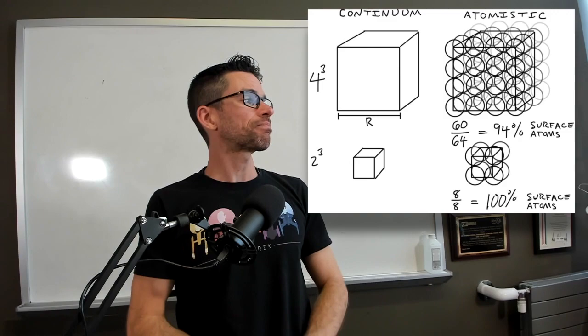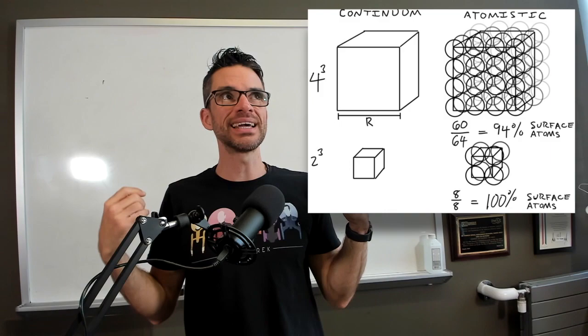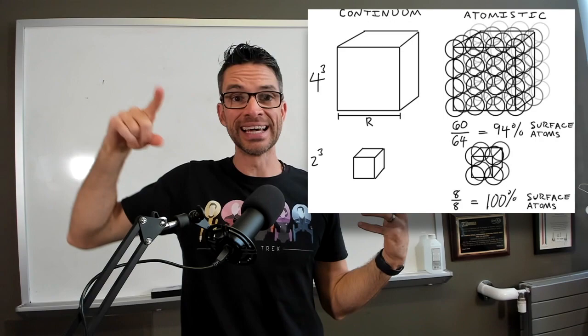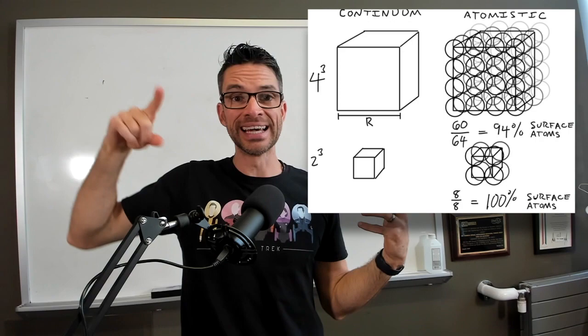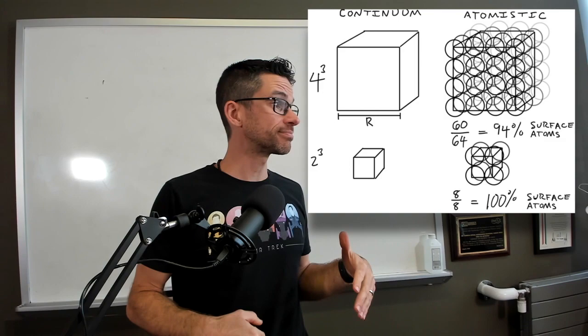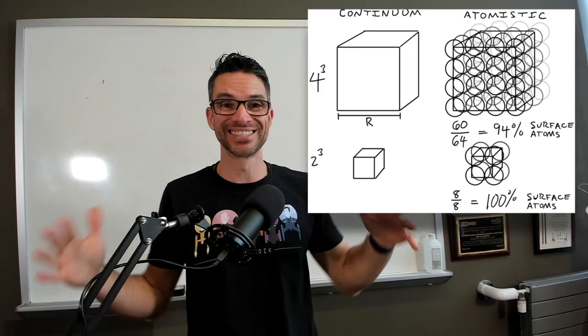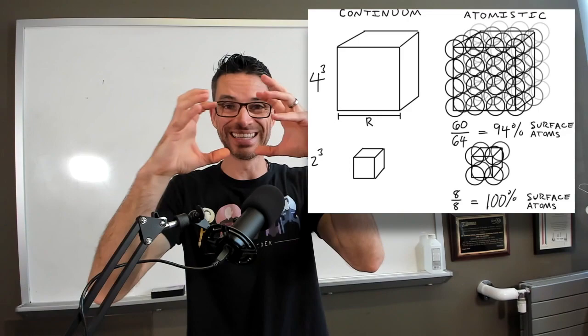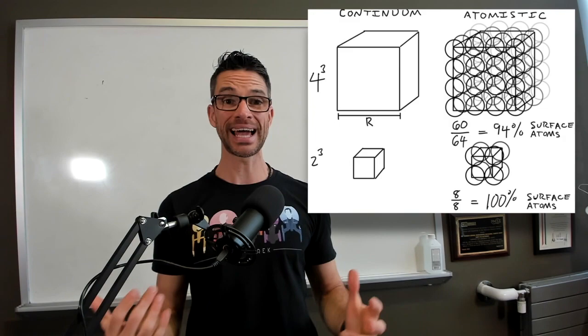Now, if you shrink that down, say you've got a structure that is only four atoms on each edge. And now you have 64 atoms in the structure. And if you do the arithmetic, you have 60 of the atoms are actually touching the surface of the object and only four of the atoms are actually in the bulk. So now most of the atoms are on the surface.